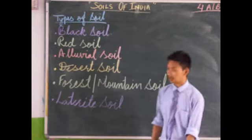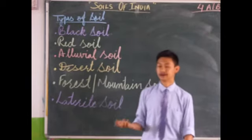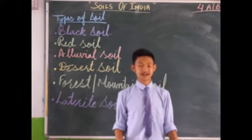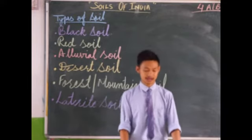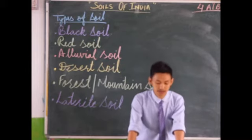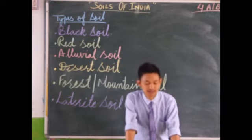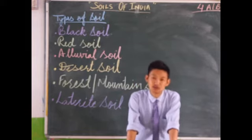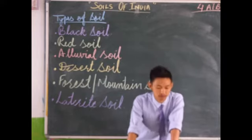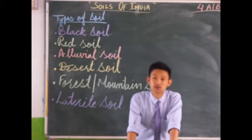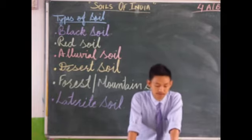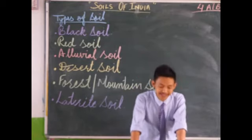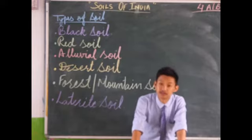Next is desert soil. It is mainly found in the dry and arid areas of Rajasthan and Gujarat. It is very dry and reddish-brown in color. It is porous, infertile, and cannot retain moisture or water. Although it is generally not possible to grow crops in this region, proper irrigation facilities enable cultivation of some crops.